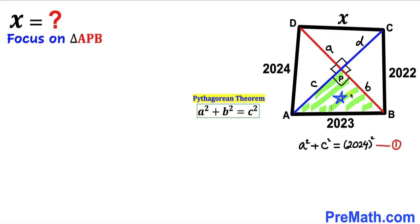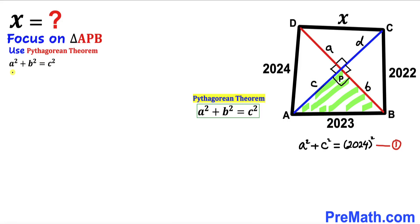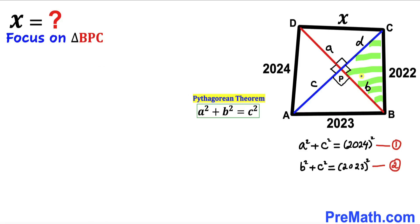Now let's focus on right triangle APB and apply the Pythagorean theorem. The hypotenuse is 2023 and the two legs are b and c. So we get b² + c² = 2023². I'll label this equation number two.